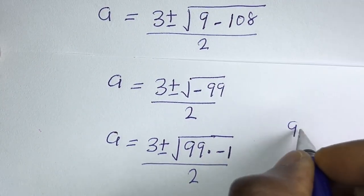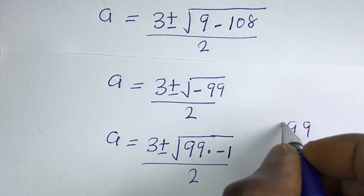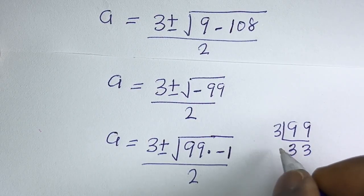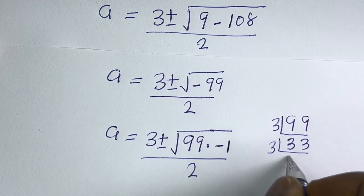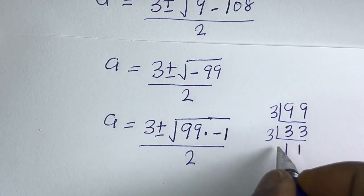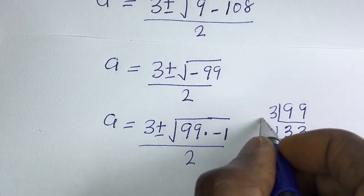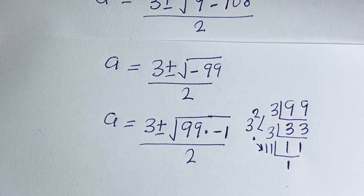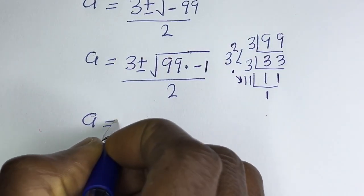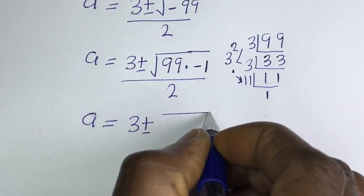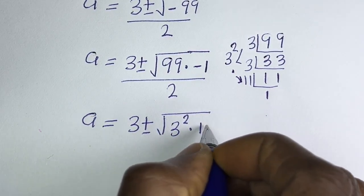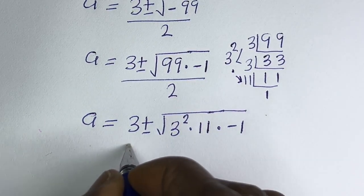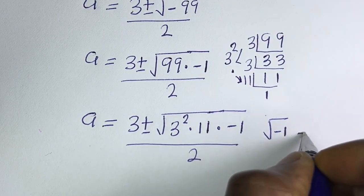Now, 99 is divisible by 3 — giving 3 times 33, and 33 is also divisible by 3, giving 3 times 11. So 99 equals 3 squared times 11. Therefore, we have a equals 3 plus or minus square root of 3 squared times 11 times minus 1, divided by 2. Since square root of minus 1 is equal to i.